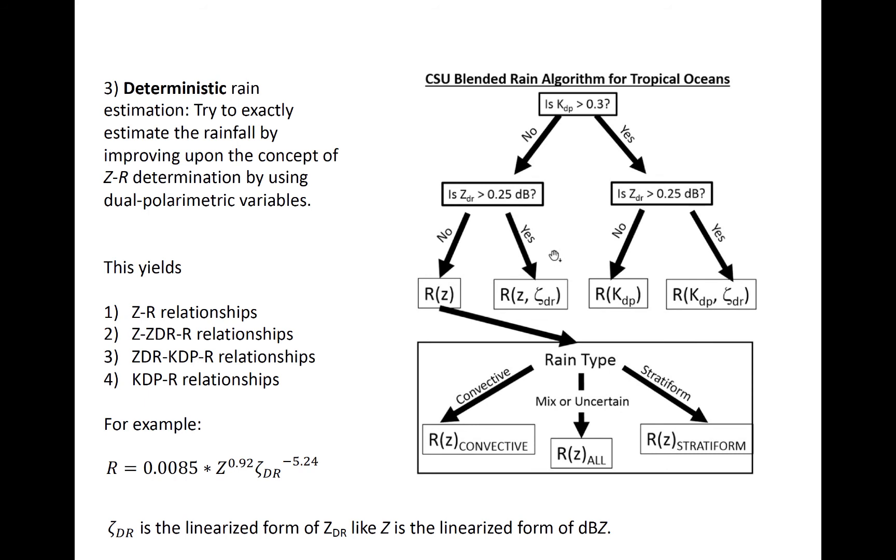In the event that both ZDR and KDP are small, a standard Z-R relationship can be used, using separate ones depending on the type of precipitation occurring. But when we do use the dual-polarimetric variables, it can help us better constrain the rain rate compared to using Z only.